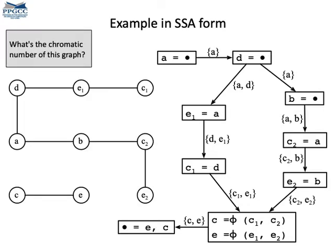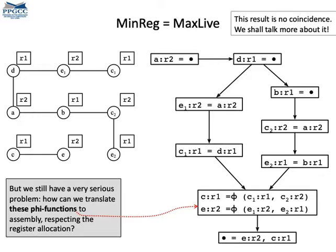You can see the interference graph on the left side of the figure, and C1 and C2, they don't interfere, neither do E1 and E2. So, what's the chromatic number of this graph? We can color the graph with two colors. That's more or less easy to see. The graph is bipartite. Every bipartite graph can be colored with two colors, and then we can map this coloring to the program. You can see the coloring on the right side of the figure, but now we have a problem.